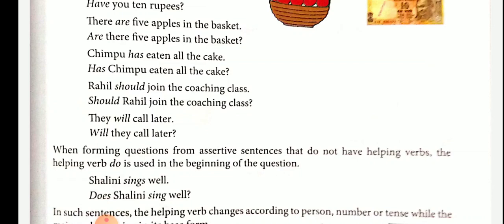Examples: Prabhu is eating an apple — Is Prabhu eating an apple? I have ten rupees — Have you ten rupees? There are five apples in the basket — Are there five apples in the basket? Chimbu has eaten all the cake — Has Chimbu eaten all the cake? Rahil should join the coaching class — Should Rahil join the coaching class? They will call later — Will they call later? In all these examples, the auxiliary verb is used at the beginning of the interrogative sentence.